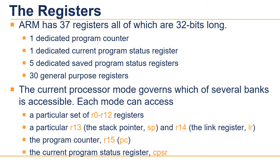A particular R14 is used as a link or return address register. Again, this will be a different R14 for each mode. R15 is used only as a program counter, and the CPSR, the current program status register, stores additional information about the state of the processor.